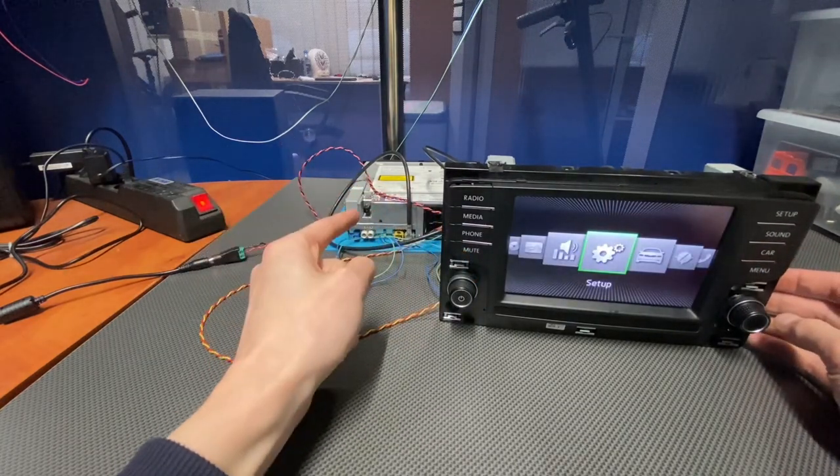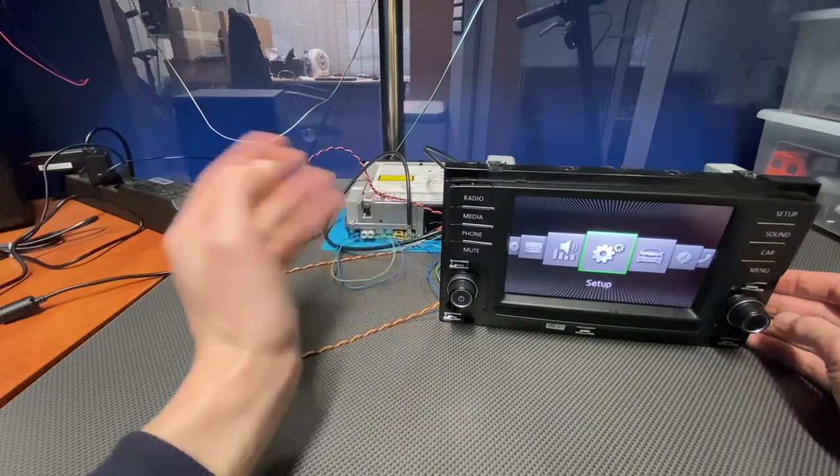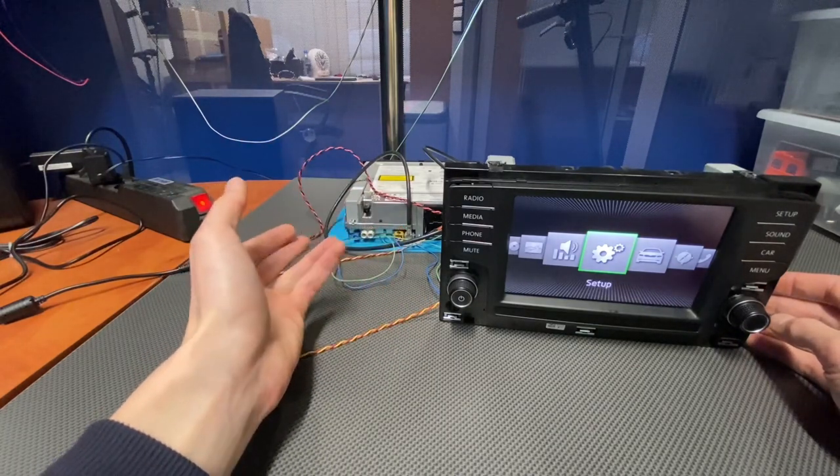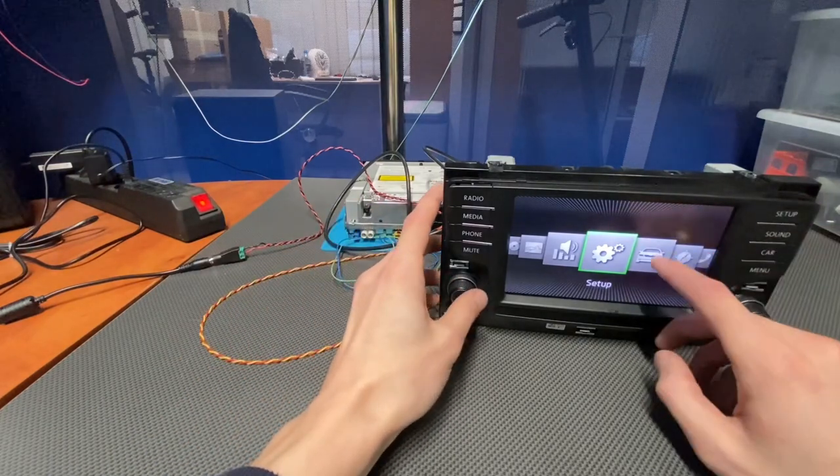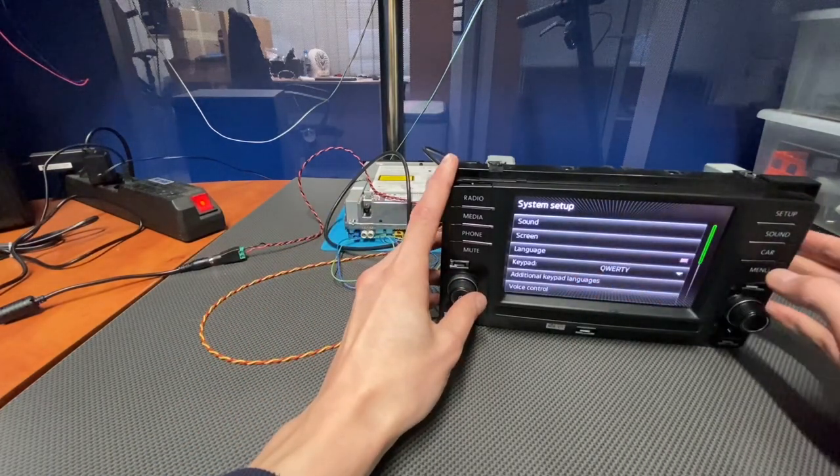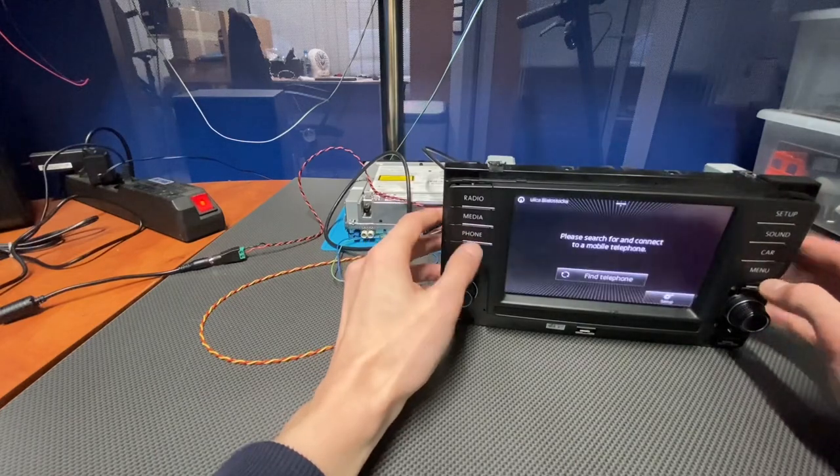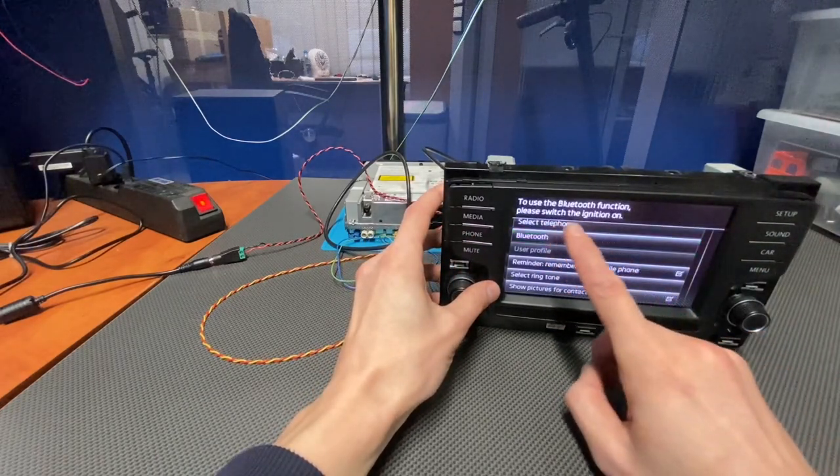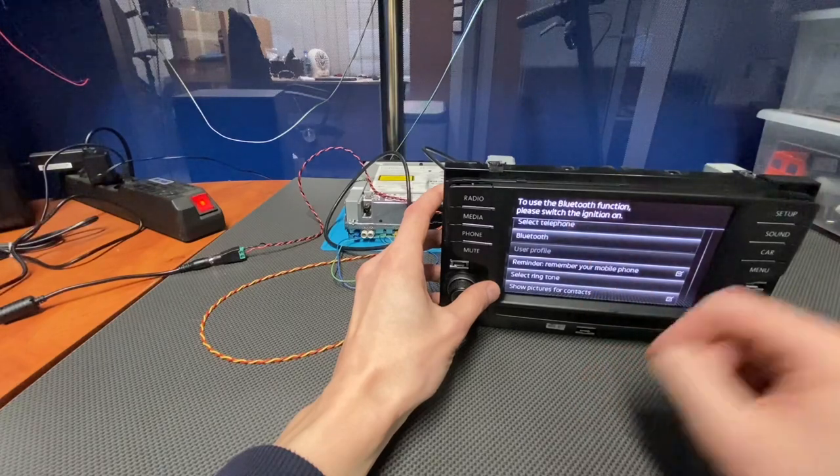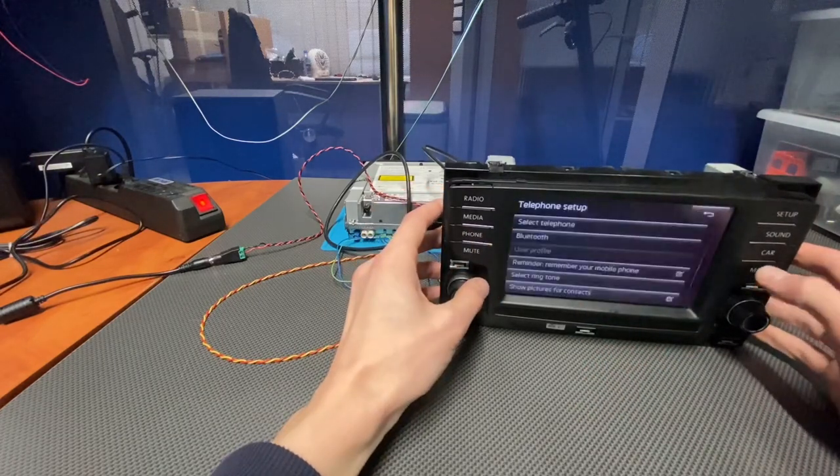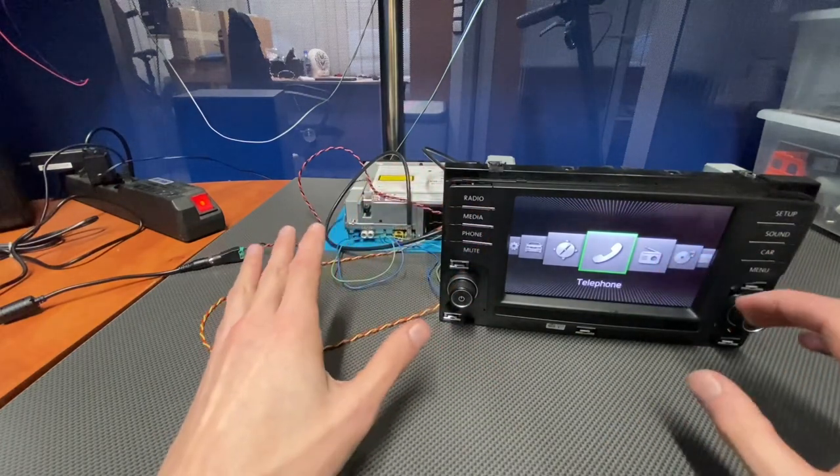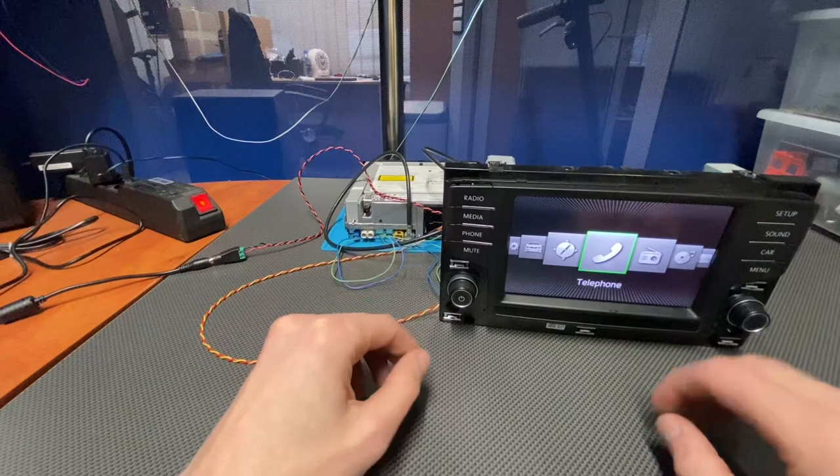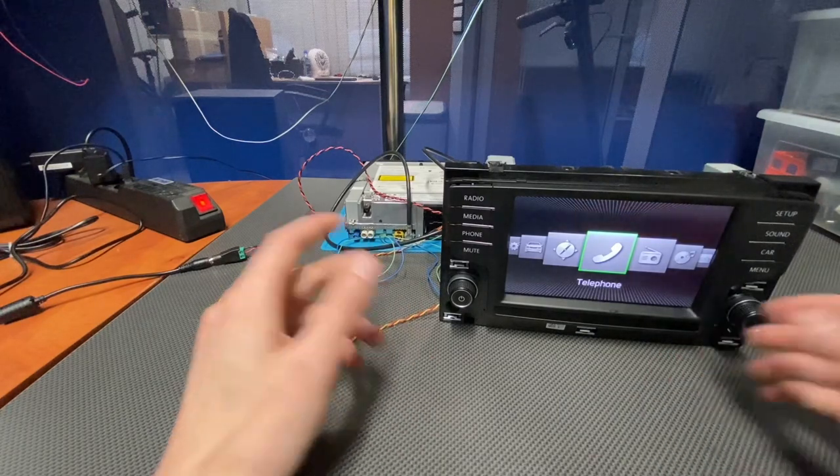So I believe the CAN bus communication works correctly, video feed works correctly. Of course, since we don't have the communication with the vehicle or an emulator that would emulate, for example, ignition signal, we don't have access to all options. For example, you cannot access Bluetooth. I believe if we go to Bluetooth setup, we have this information that the ignition needs to be turned on. So there are some things that we cannot do with this setup, but I will try to figure it out soon enough.